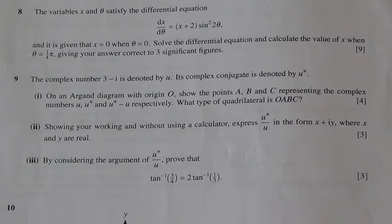For the second part, showing your working and without using a calculator, express u star over u in the form x plus iy, where x and y are real. Third part, by considering the argument of u star over u, prove that the inverse tan of three-quarter is equal to two inverse tan of one-third.